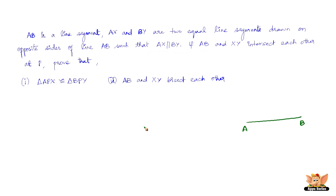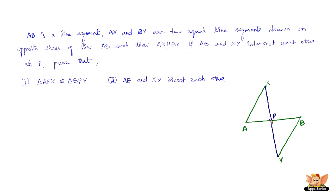Let us first form the figure. AX and BY are two equal line segments drawn on opposite sides of line AB. AX is parallel to BY — if you extend these lines, they are never going to meet each other. Now if AB and XY intersect each other at P, we get triangle APX and triangle BPY, and we need to prove that these two triangles are congruent.